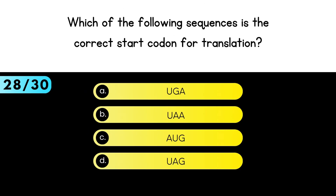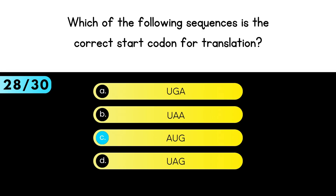Which sequence is the correct start codon for translation? A, U, G is the answer.